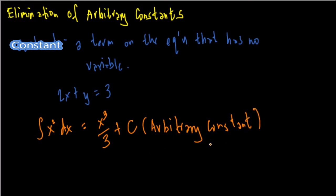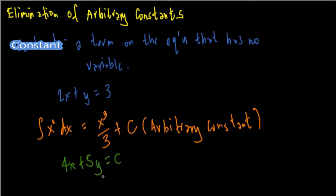The C stands for any number that is constant and has no variable in it — it is not affected by any value of x or y. That's why it's called an arbitrary constant. To get the differential equation of a given equation, we need to eliminate the arbitrary constant. For example, 4x plus 5y equals C.